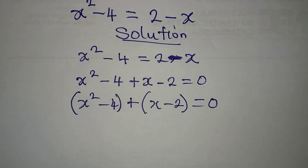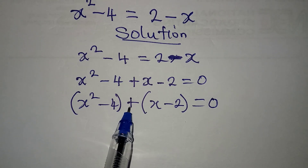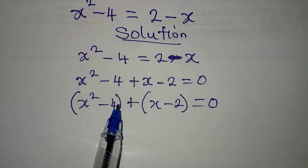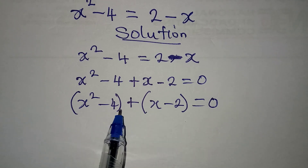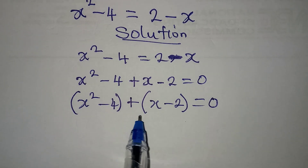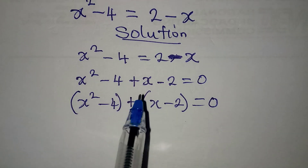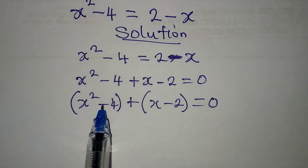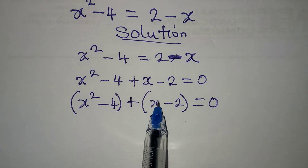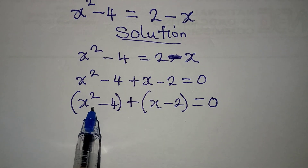But you cannot equate them to 0 now because we are having addition. It is when you have multiplication that you can equate either of them to 0. So because of that, we will factor out what we have here.